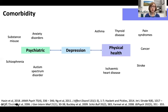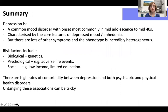In some situations these associations can move in either direction, but this is difficult to untangle with the existing data. To summarize, depression is a common, phenotypically heterogeneous disorder with multiple risk factors crossing the biological, psychological, and social domains. There are high rates of comorbidity with other disorders, and untangling some of these associations can be quite difficult. I'll now hand you over to Lu Yi for her section of the review.